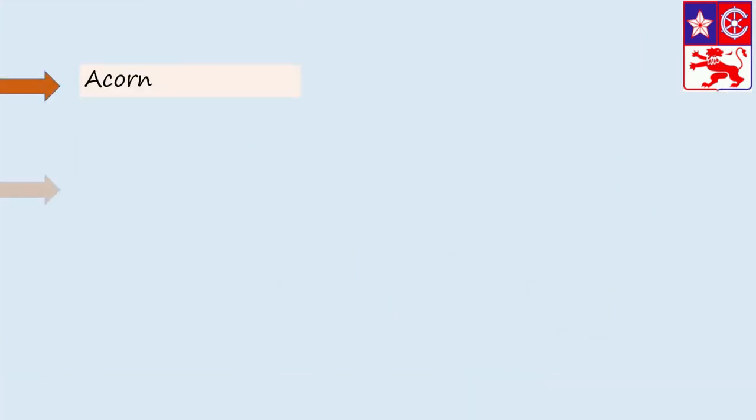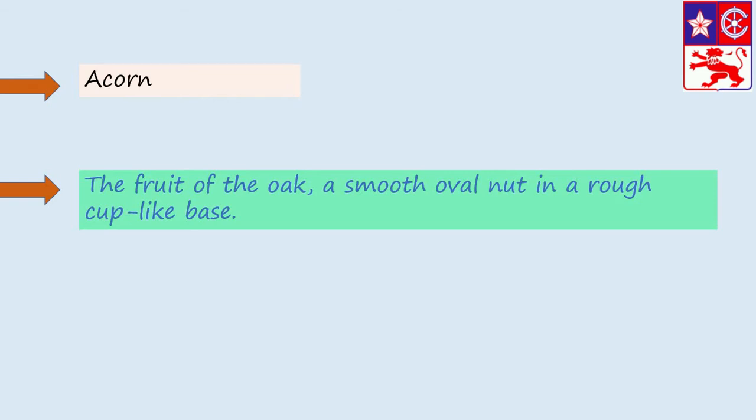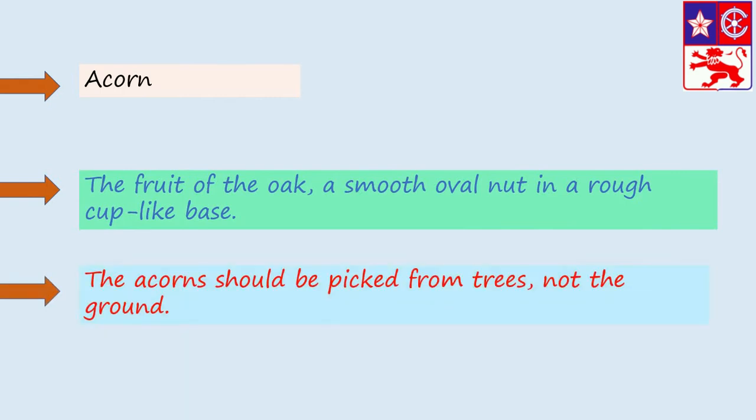Acorn. The fruit of the oak, a smooth oval nut in a rough cup-like paste. For example, the acorn should be picked from trees not the ground.